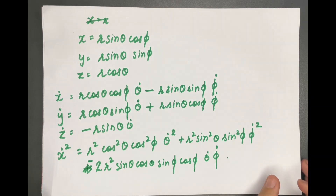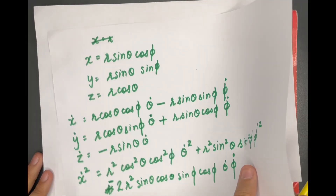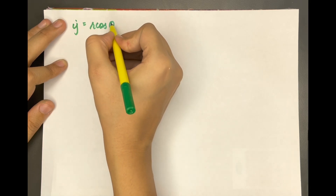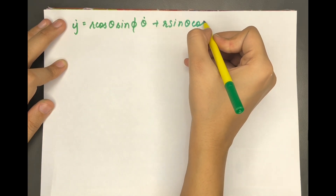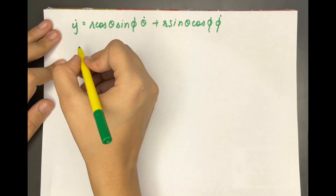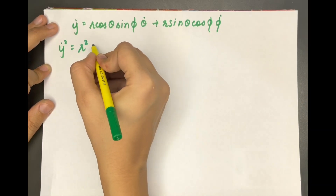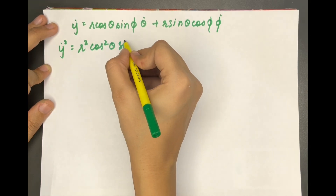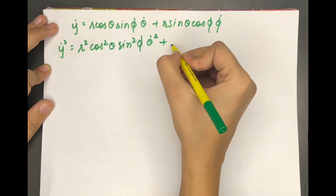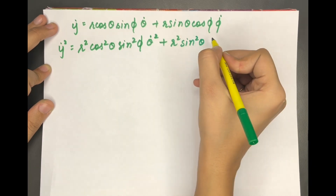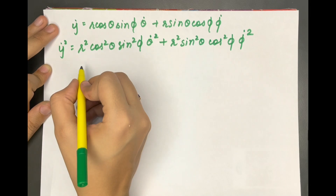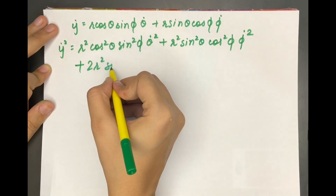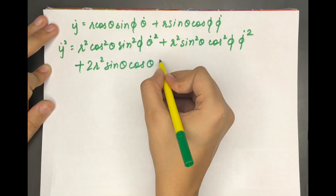Next, let's calculate ẏ². We have ẏ = r cosθ sinφ θ̇ + r sinθ cosφ φ̇, so ẏ² = r² cos²θ sin²φ θ̇² + r² sin²θ cos²φ φ̇² plus a cross term r² sinθ cosθ sinφ cosφ θ̇φ̇.